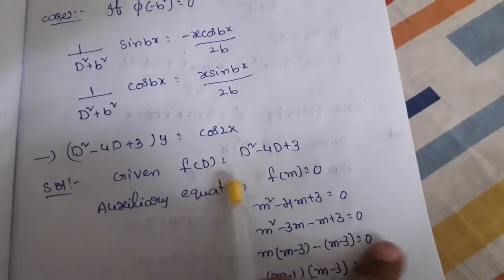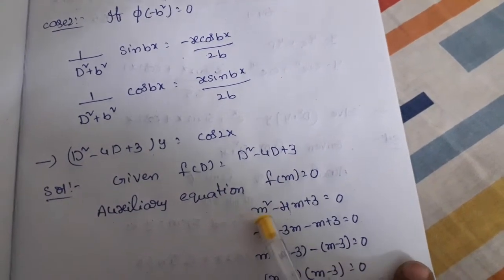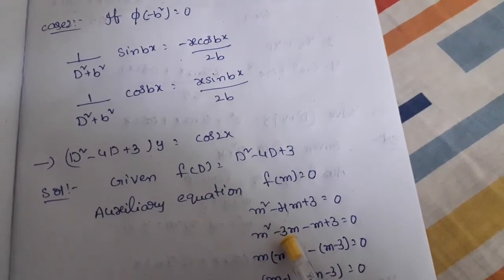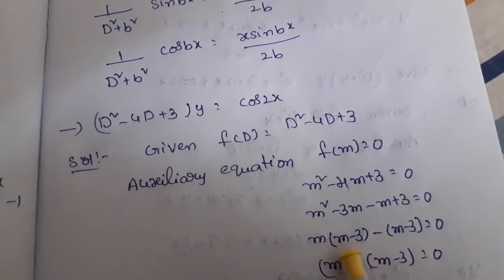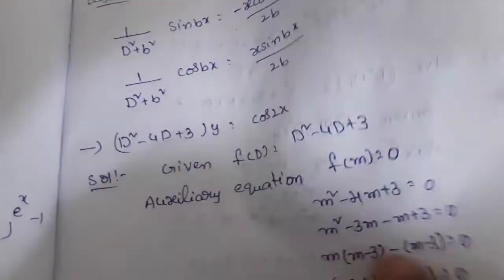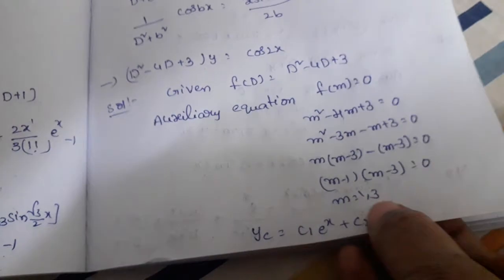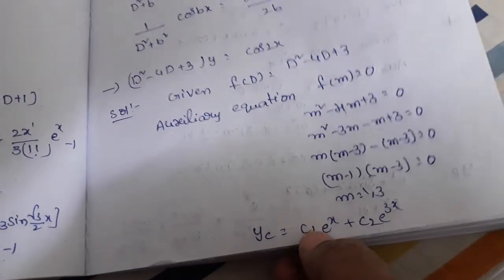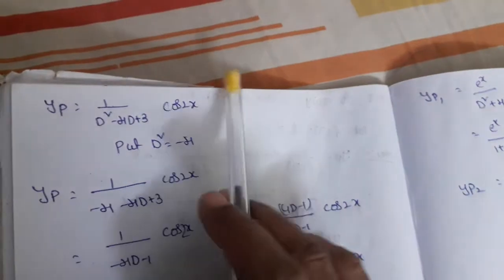Let's solve a problem: (D²−4D+3)y = cos(2x). Given f(D) = D²−4D+3, the auxiliary equation is f(m) = 0, that is m²−4m+3 = 0. Factoring: (m−1)(m−3) = 0, so m = 1 and m = 3 are the roots. The complementary function yc = c₁eˣ + c₂e^(3x), since the roots are real and different.